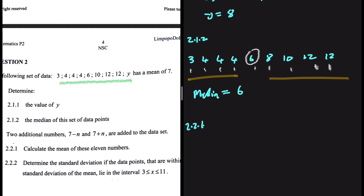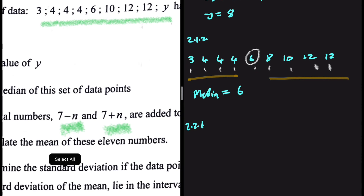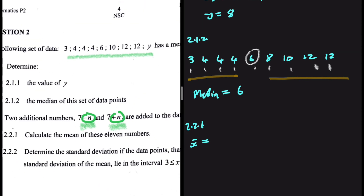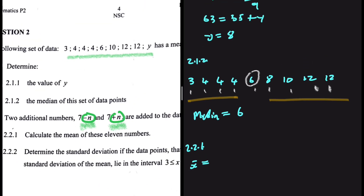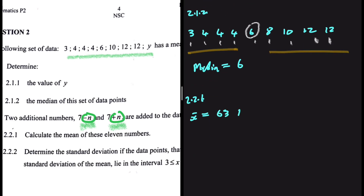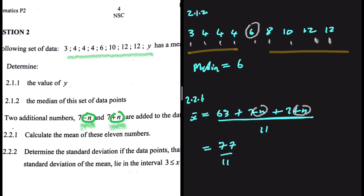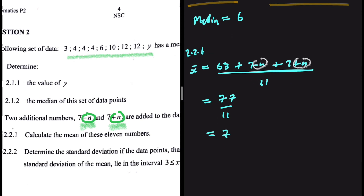For 2.2.1, two additional numbers — 7 minus N and 7 plus N — are added to the data set. We need to find the mean of these 11 numbers. A lot of people might think this is difficult, but it's not. These variables cancel each other out — we have minus N and plus N. We know the previous sum was 63, so the mean is 63 plus (7 minus N) plus (7 plus N), all divided by 11. The N terms cancel, giving us 63 plus 7 plus 7, which is 77 divided by 11. That equals 7, so our mean is still 7.